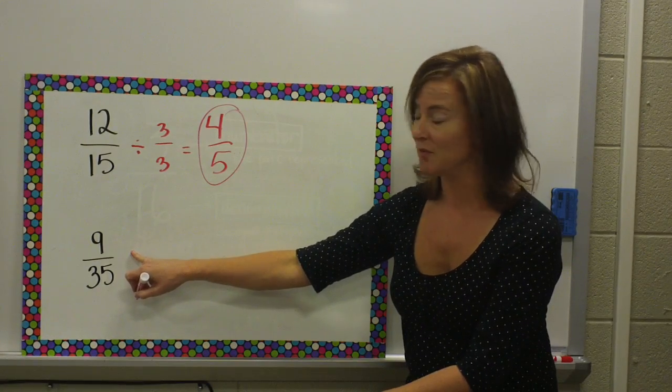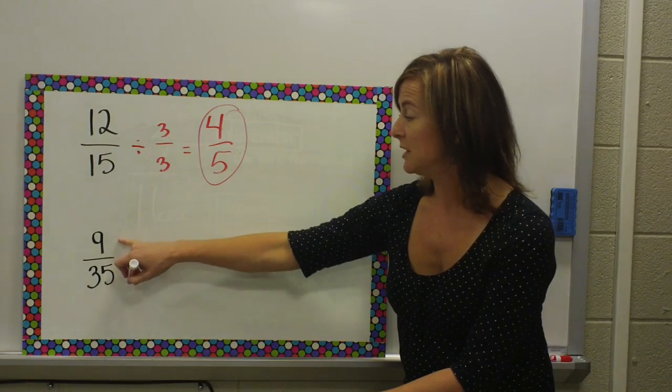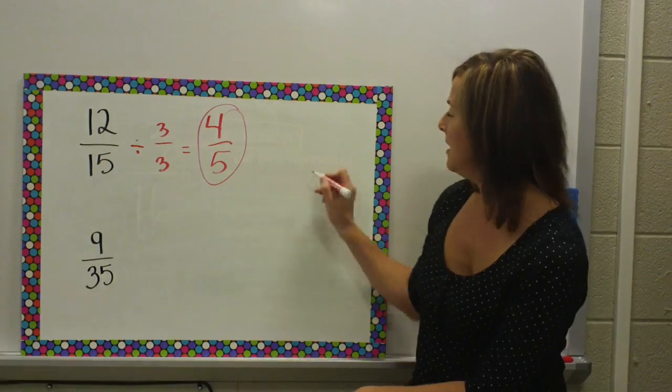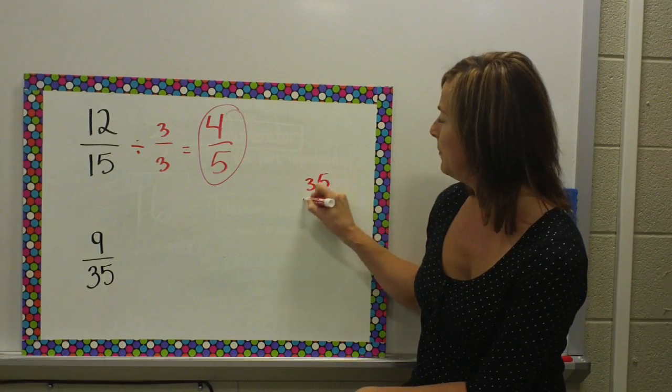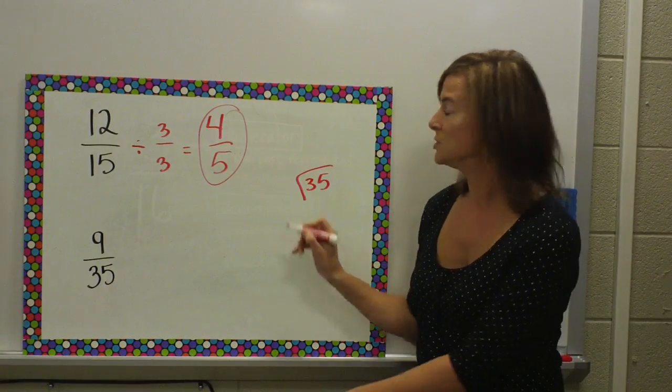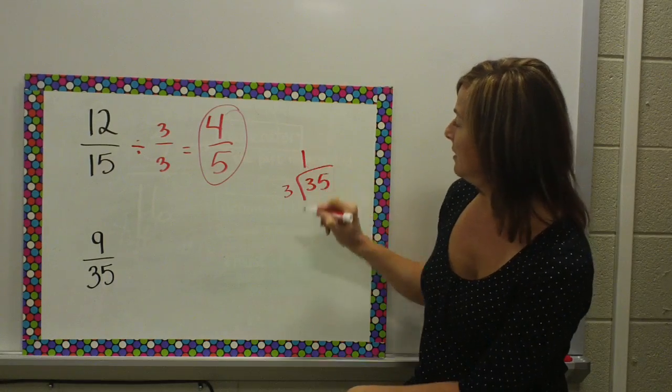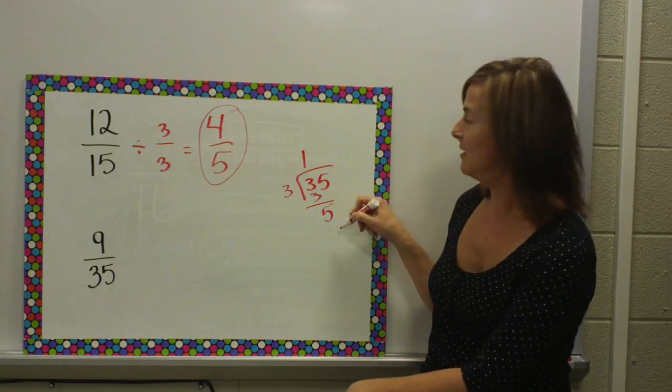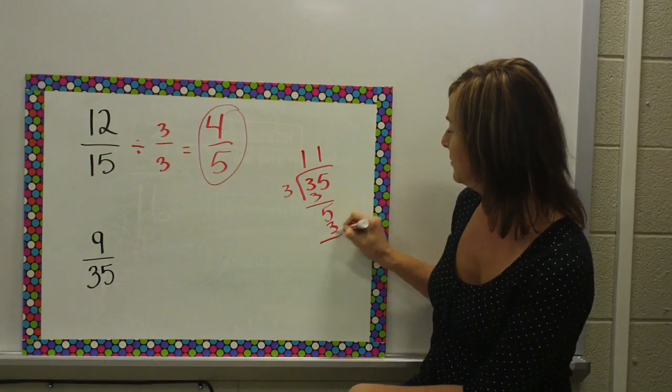3 times 3 gives me 9. Does anything times 3 give me 35? I know that it doesn't, but if I were a student that wasn't sure, take that extra minute to try. And, nothing times 3 gives me 5, because I would get a remainder.